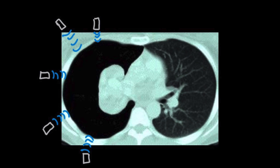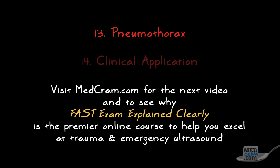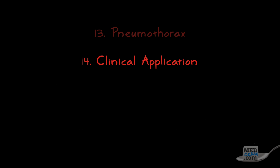Lastly, one important caveat about the lung point: although it's 100% specific for pneumothorax and helps define its borders, if there's a complete pneumothorax, you will not see a lung point. If you interrogate from any direction with the ultrasound probe, you're never going to see that transition point because there is none — in a complete pneumothorax, the lung edges never touch the chest wall. We'll discuss the clinical implications in future videos. That was pneumothorax, lack of lung sliding, and the lung point. In the next video, we're going to discuss the clinical application in the extended FAST exam.